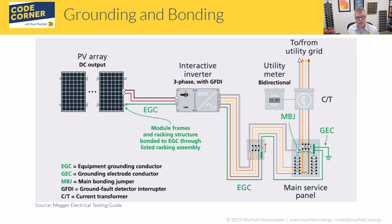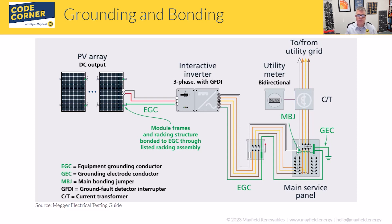Inside the main service panel there are a couple of different things to note. We have the MBJ — the main bonding jumper — which bonds the grounding electrode system to the grounded conductor, or neutral. That's the common configuration in our electrical systems here in the US. The MBJ can be wire type or other methods, and it makes the connection bonding the neutral to the earth ground.